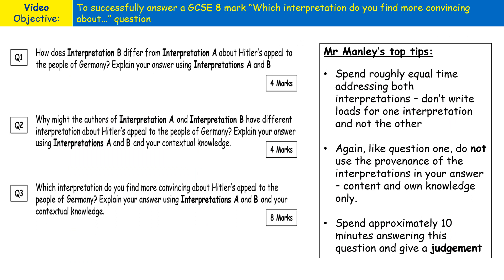This question is the third question in the Germany assessment paper and it's worth eight marks. To get the highest possible marks, you need to spend roughly equal time addressing both interpretations. You don't want to write loads for Interpretation A and only a little for Interpretation B — aim to write a similar amount for each.